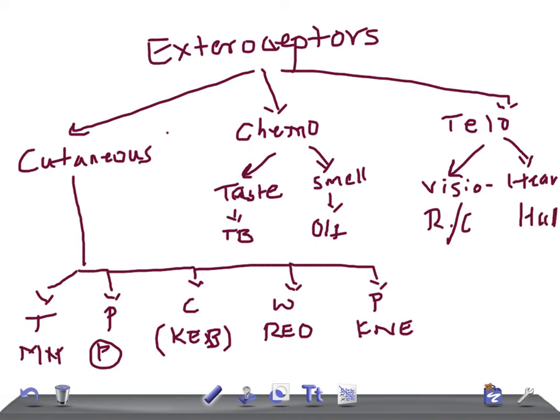So this is the classification of exteroceptors. Receptors are divided into two: exteroceptors and interoceptors. The exteroceptors are divided into three types — cutaneous, chemoreceptors, and teloreceptors. Cutaneous is further divided into five groups: touch, pressure, cold, warmth, and pain. Chemoreceptors include taste and smell, and teloreceptors include vision and hearing with rods, cones, and hair cells.